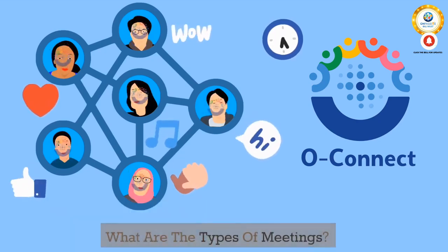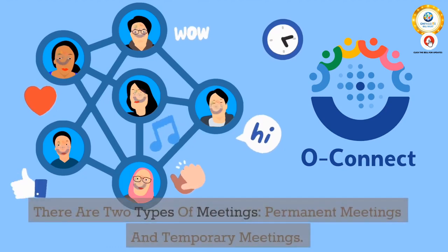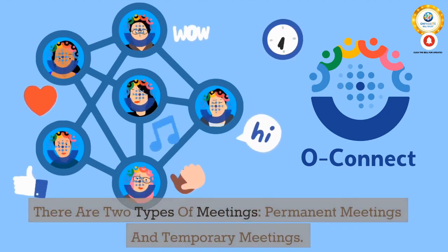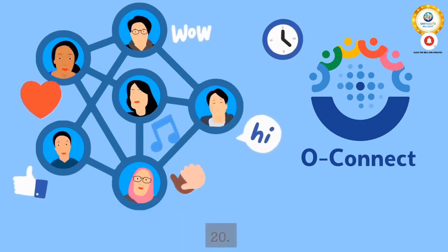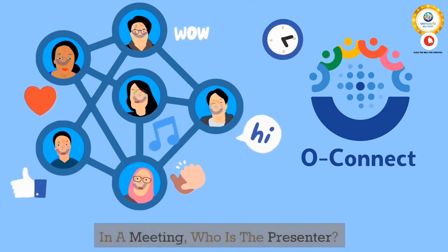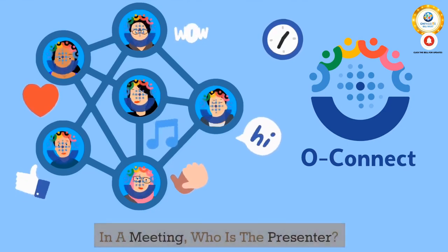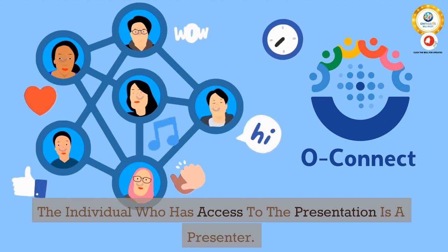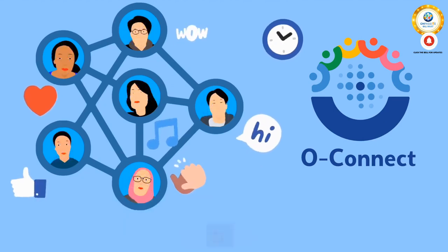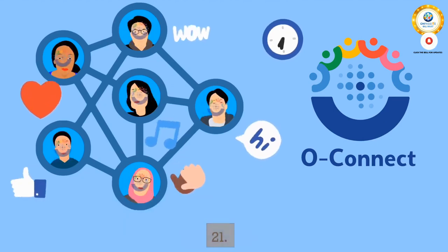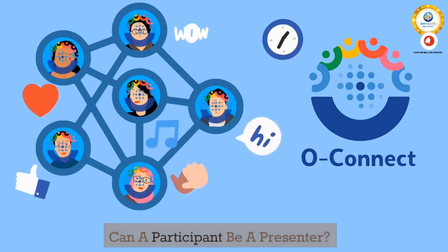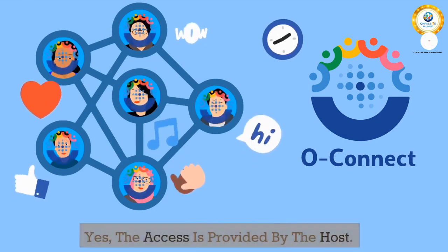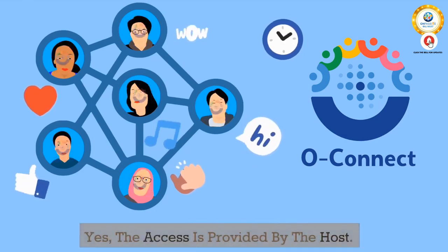19. What are the types of meetings? There are two types of meetings: permanent meetings and temporary meetings. 20. In a meeting, who is the presenter? The individual who has access to the presentation is a presenter. 21. Can a participant be a presenter? Yes, the access is provided by the host.